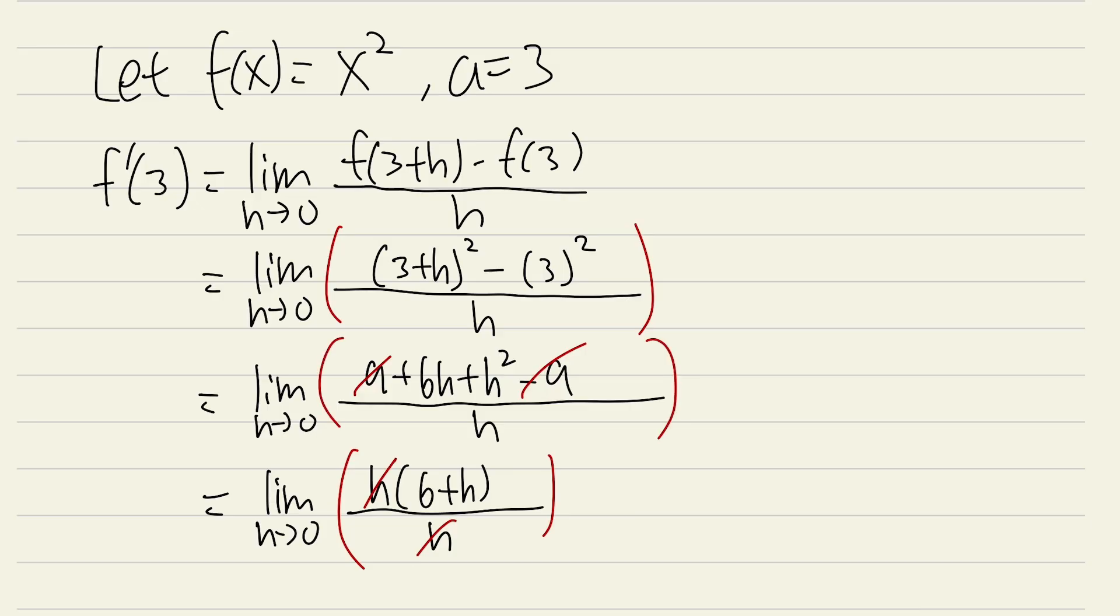We always did the inside first, like this. Then, we put the 0 into the remaining h. That will give us 6 plus 0, and that will give us 6. Done.